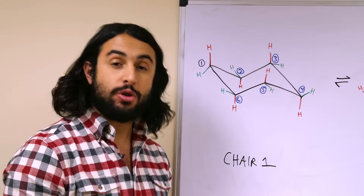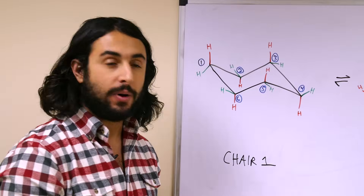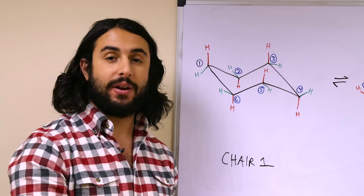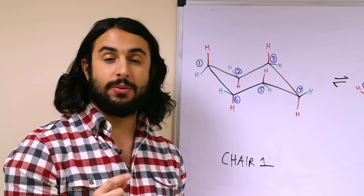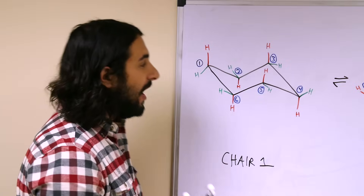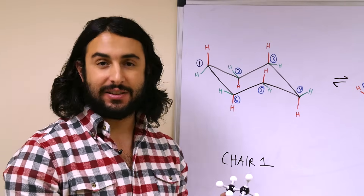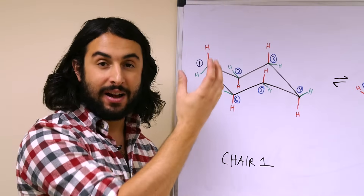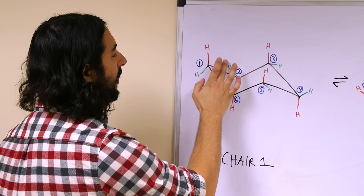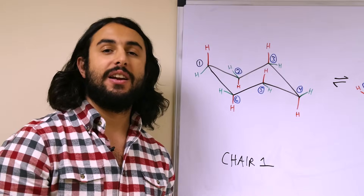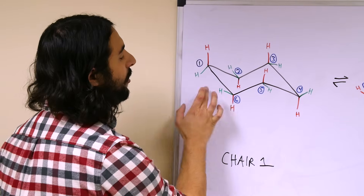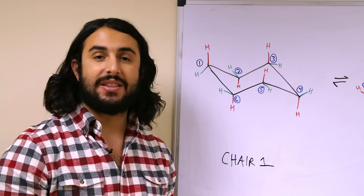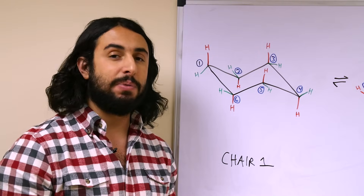Each carbon on the ring is going to have one group projecting up from the ring and one group projecting down from the ring. In addition, each carbon is going to have an axial substituent and an equatorial substituent. For axial, you can think of this as lying on a vertical axis. The red hydrogens on the left are the axial hydrogens, projecting directly up or down vertically from the ring. The green ones are the equatorial — you can think of them as lying more nearly to the equator of the molecule.